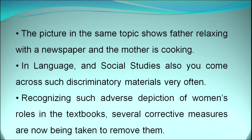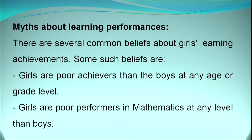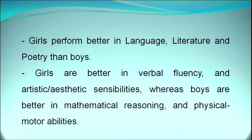Corrective measures are now being taken to remove adverse depictions of women's roles in textbooks. Myths about learning performance: as a society we believe girls can do certain things and boys can do others. Beliefs include that girls are poor achievers compared to boys at any grade level, that girls are poor performers in mathematics, and that girls are better in verbal fluency and artistic sensibilities whereas boys are better in mathematical reasoning and physical motor abilities — which our society needs to challenge.